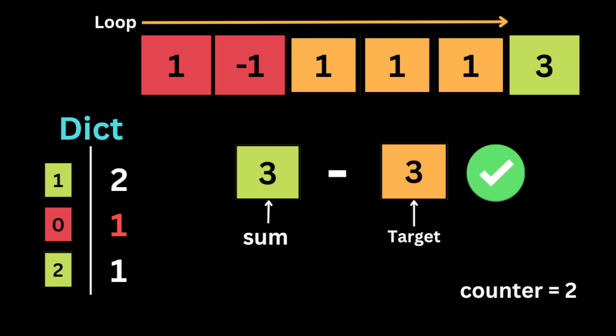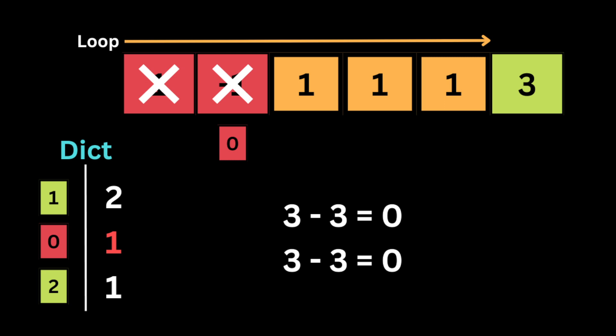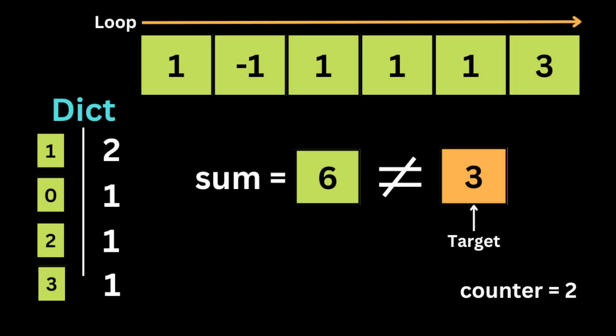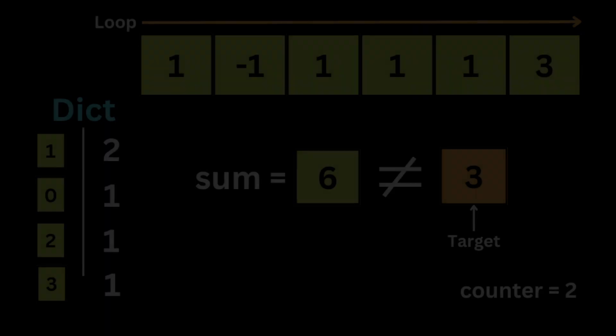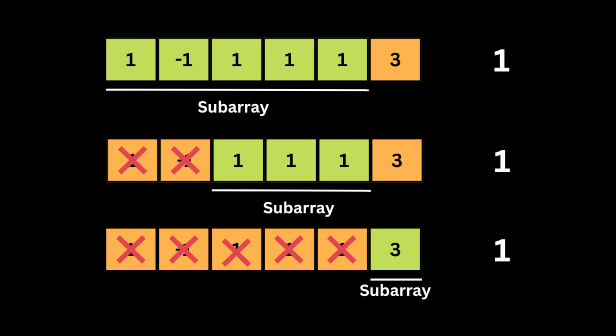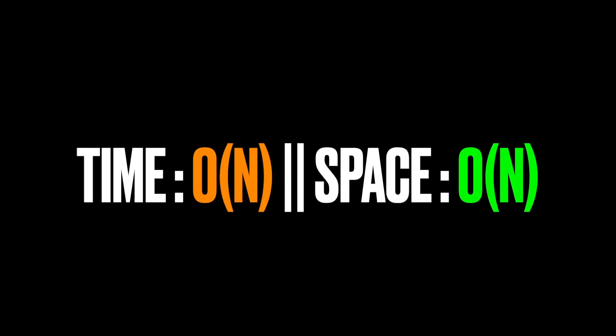We look up 0 in the dictionary — it's like eliminating the subarray with sum 0 (which is minus 1 and 1) so we can identify the second subarray equal to k (the three 1s). We increment counter by the value associated with key 0 in the dictionary. We then add sum 3 to the dictionary. Moving to the next number, 3, sum becomes 6. The difference is 6 minus 3 equals 3, and we find 3 in the dictionary, incrementing counter by that value. Finally we return the counter.